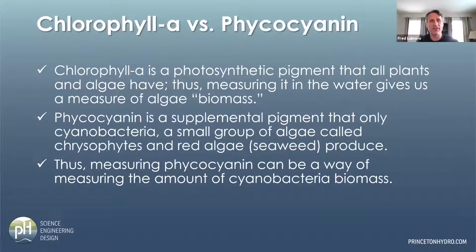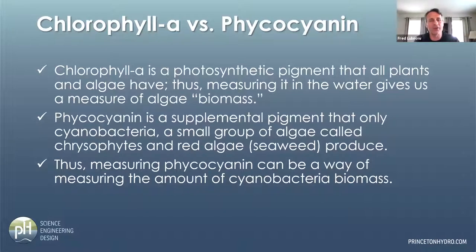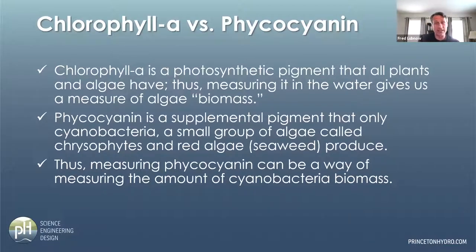Regarding chlorophyll versus phycocyanin: when you measure chlorophyll A you're getting an idea of all the algae; when you measure phycocyanin in freshwater systems, you're essentially getting an idea of all the cyanobacteria. There was something interesting this spring where we were getting high phycocyanin but very little cyanobacteria — it turned out a small group of freshwater algae called cryptomonads also have phycocyanin. For the most part, phycocyanin is very effective at quantifying cyanobacteria biomass.